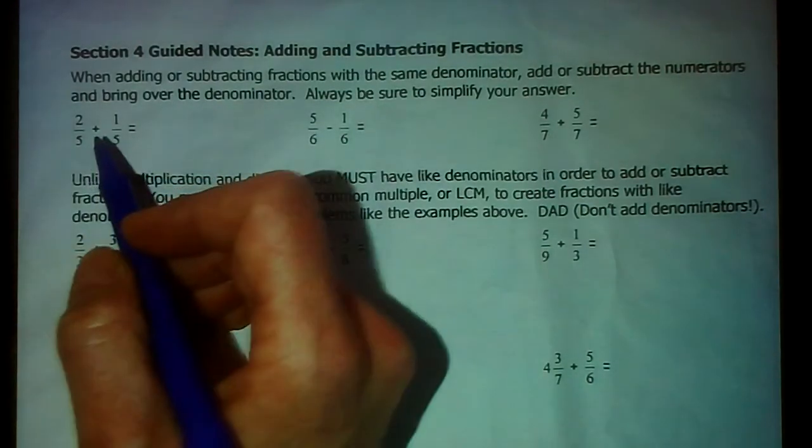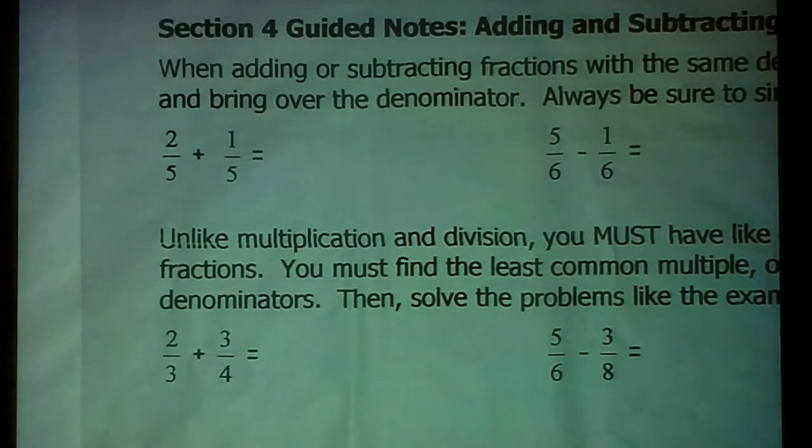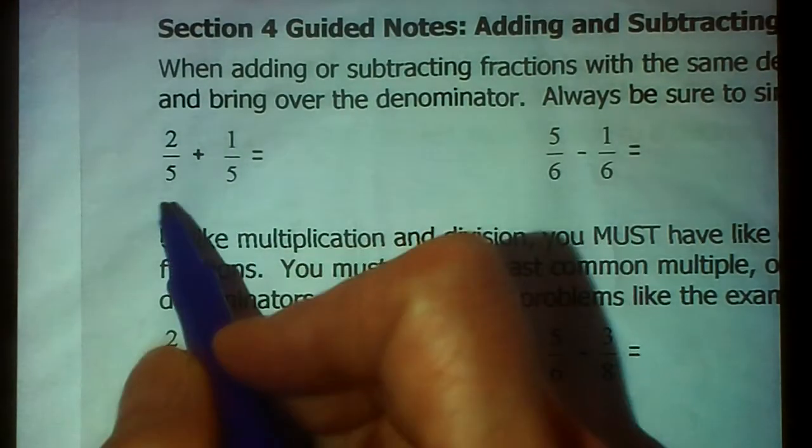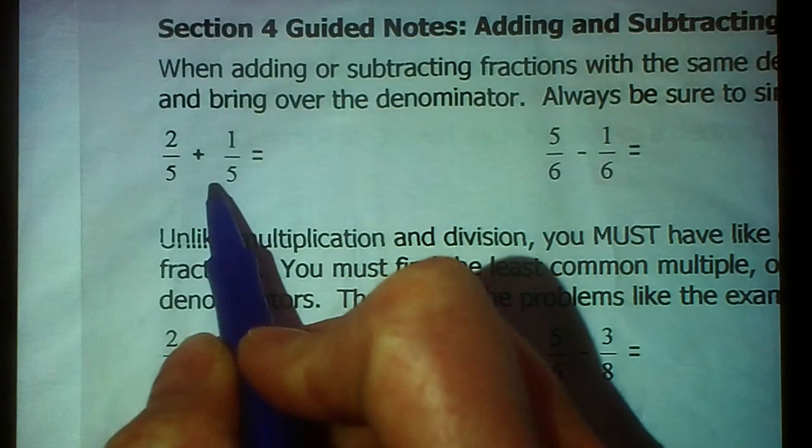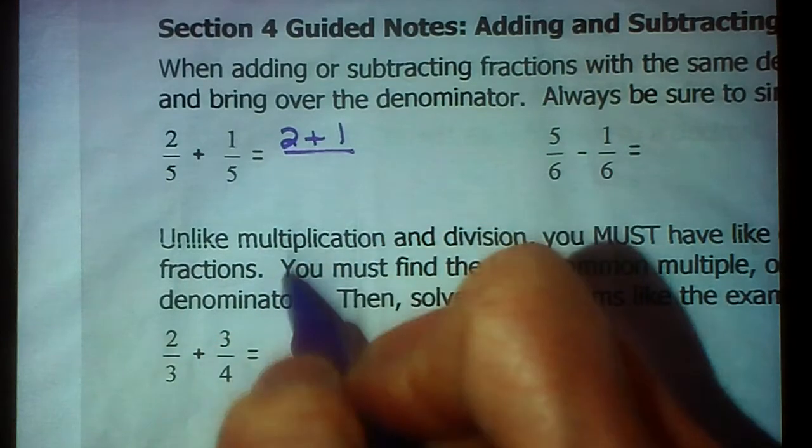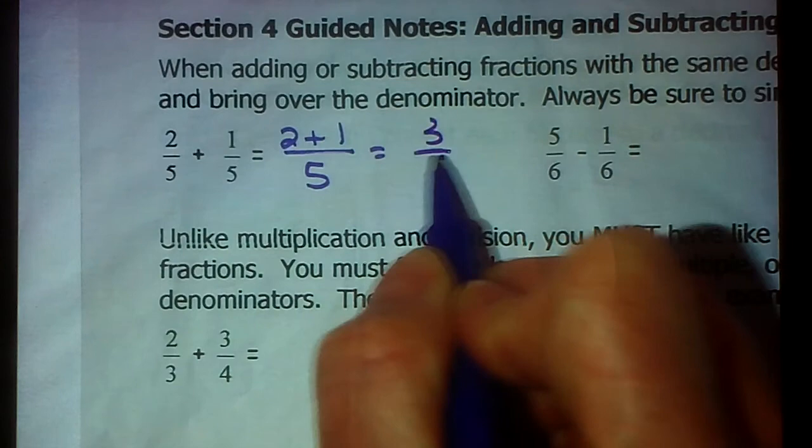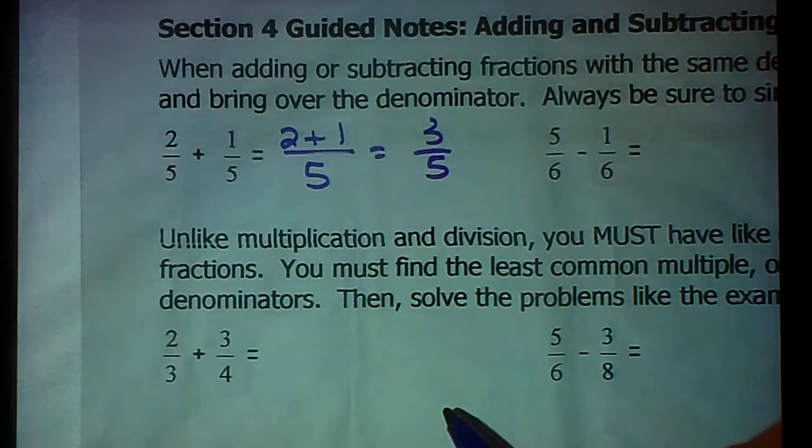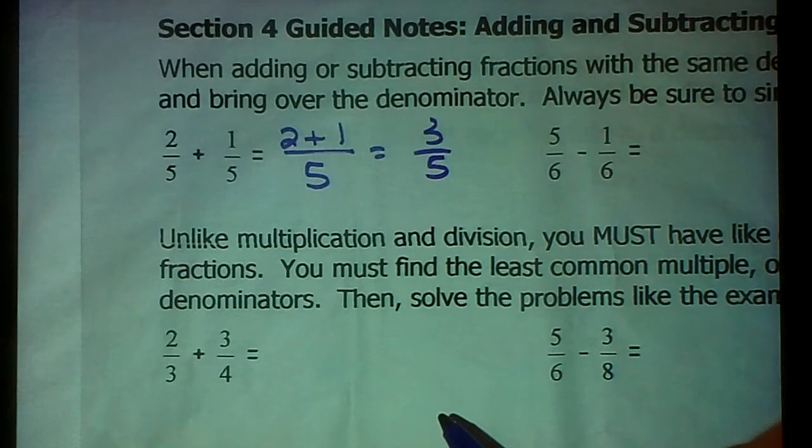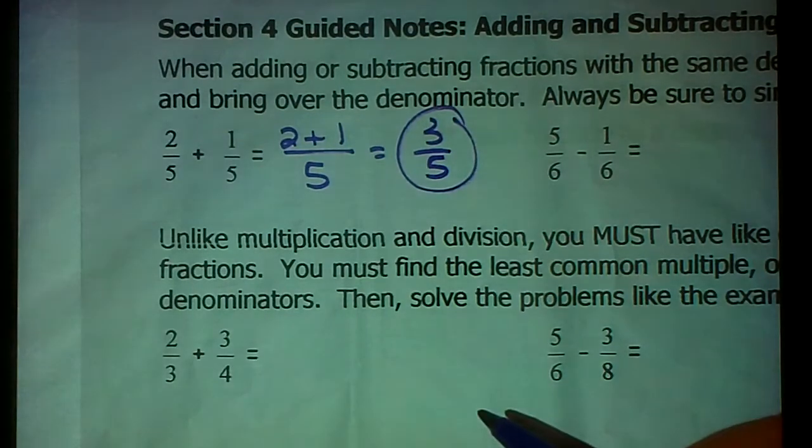So right here, we have 2/5 plus 1/5. Now, before you can add or subtract a fraction, you need to make sure that you have like denominators. And these first three examples are awesome, because in all three of them, the denominators are the same. So when you see you have like denominators, you're going to add the numerators and bring over the denominator. So the result of this is 3/5. It is not 3/10, I promise you. It is 3/5. Can you tell the mistakes we see a lot? It's a common misconception. Don't be fooled.